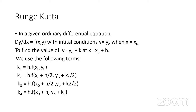Compared to Euler's method, RK4 is much more difficult to calculate. If you just need estimates, Euler's method may be sufficient; but for a more accurate solution, use Runge-Kutta. Instead of solving for y at different points like Euler does, RK4 solves for intermediate slope values. Given a general ODE dy/dx = f(x, y) with initial conditions y = y₀ at x = x₀, we find y = y₀ + k at x = x₀ + h using the following terms.